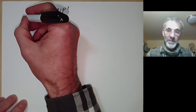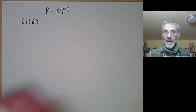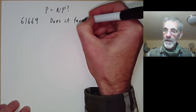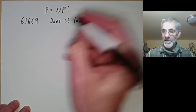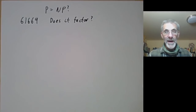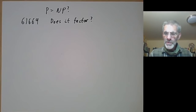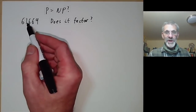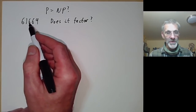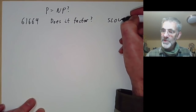Let me start with an example. Suppose you take the number 61669 and I ask: does it factor in a non-trivial way? Obviously I don't want to factor 1 times 61669. If I asked you for the answer and made you do it by paper and pencil, you could do it — you would just check 2, 3, 5, 7 and so on as factors. It would be an extremely tedious calculation, but you could do it. And you notice that this calculation is pretty slow.